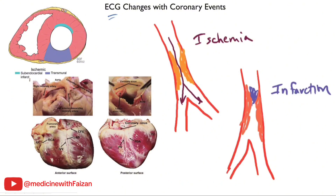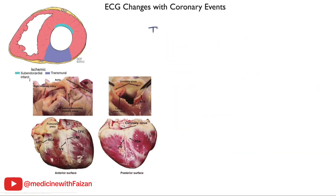The physiologic difference has to do with how much of the wall thickness is affected by the process. Starting with ischemia first: what you generally see is ST segment depression in the anatomical region that is affected by the ischemia.